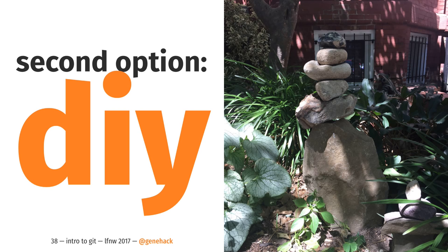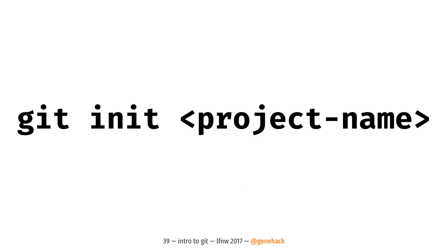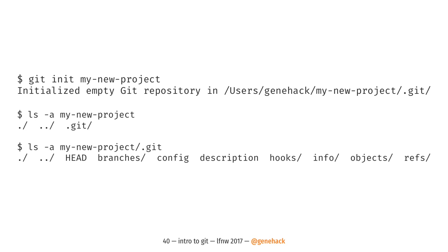The second option for getting a repository is to make your own with a command called 'git init.' You say 'git init' and then give your project a name, and it will say 'initialized empty git repository.' If you look inside that new project directory, there's one directory called .git and that's it. If you look inside .git, you'll see a whole bunch of stuff you can completely ignore — that's where Git keeps all of its data. If you ever have a Git repository that you want to stop being a Git repository, you can delete that .git directory.